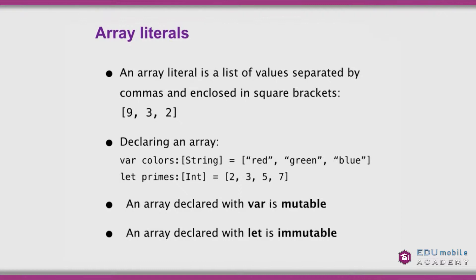We declare an array — the full form: var colors: [String] = ["red", "green", "blue"]; let primes: [Int] = [2, 3, 5, 7]. An array declared with var is mutable, and one declared with let is immutable. This is the same concept as Objective-C's NSMutableArray and NSArray, but in Swift it's just how you declare it — var for variable, let for constant.